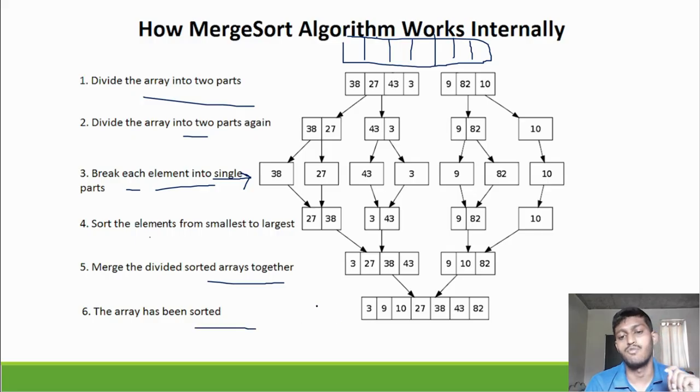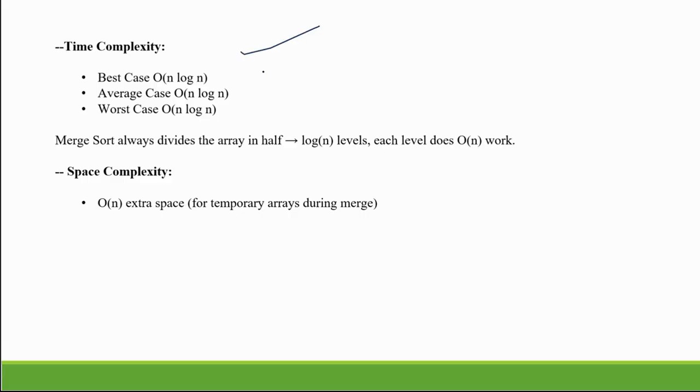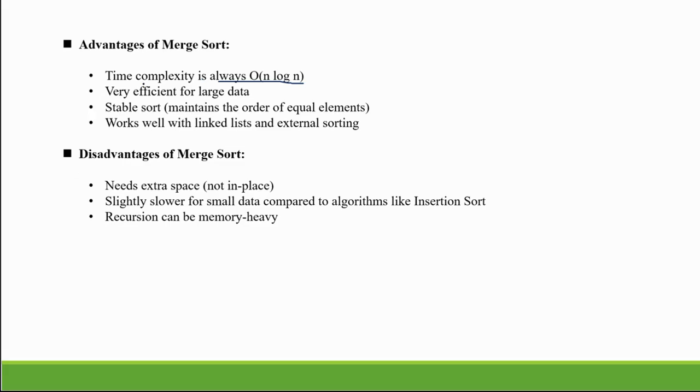Now let's see the advantages of merge sort. The time complexity is always big O of n log n in the best case, worst case, or average case. Very efficient for large data when our data set is bigger. Stable sort maintains the order of equal elements. It is one of the stable sorting algorithms. Works well with linked lists and external sorting.